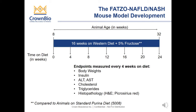The FATSO NAFLD NASH model was generated by placing FATSO mice on a Western diet, and we also included 5% fructose in the drinking water. At eight weeks of age, FATSO mice were randomized based on body weight and glucose levels into two groups of 48 animals each, and the remaining eight animals were used to establish baseline parameters for the study. One group was placed on the Western diet with 5% fructose in drinking water, and the other group remained on the standard Purina 5008 diet. Each month, eight animals from each group were terminated and blood was collected via cardiac puncture for analysis of glucose, insulin, liver enzymes, cholesterol, and triglycerides. We also collected livers and performed histology.